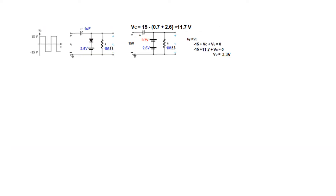Now let's apply the input signal to our designed circuit and verify the output. We replace the diode with 0.7 volts for the forward biased positive half, and include the 2.6 volt battery. The capacitor charges through this loop, so the net charging voltage is 15 minus 0.7 plus 2.6, giving 11.7 volts. Applying KVL: minus 15 plus Vc plus V0 equals 0, with Vc equal to 11.7, giving V0 equal to 3.3 volts.